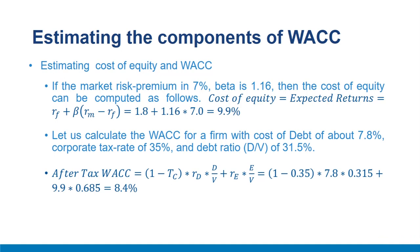If the market risk premium is 7% and beta is 1.16, the cost of equity equals RF + β × (RM − RF) = 1.8% + 1.16 × 7% = 9.9%. For a firm with cost of debt of 7.8%, corporate tax rate of 35%, and debt-to-value ratio of 31.5%, the after-tax WACC = (1 − 0.35) × 7.8% × 0.315 + 9.9% × 0.685 = 8.4%. The firm should therefore set its cost of capital estimate to 8.4%.